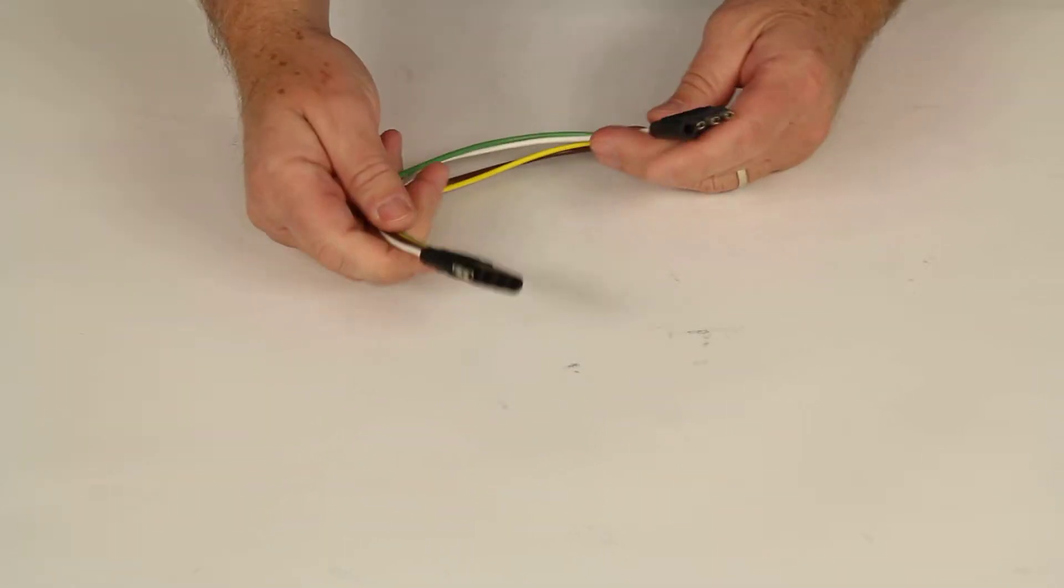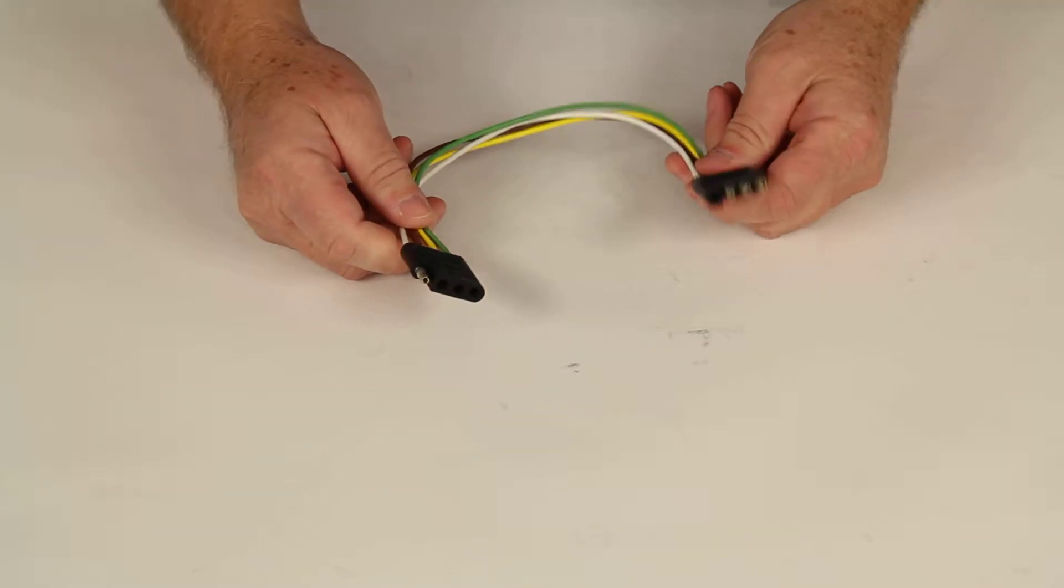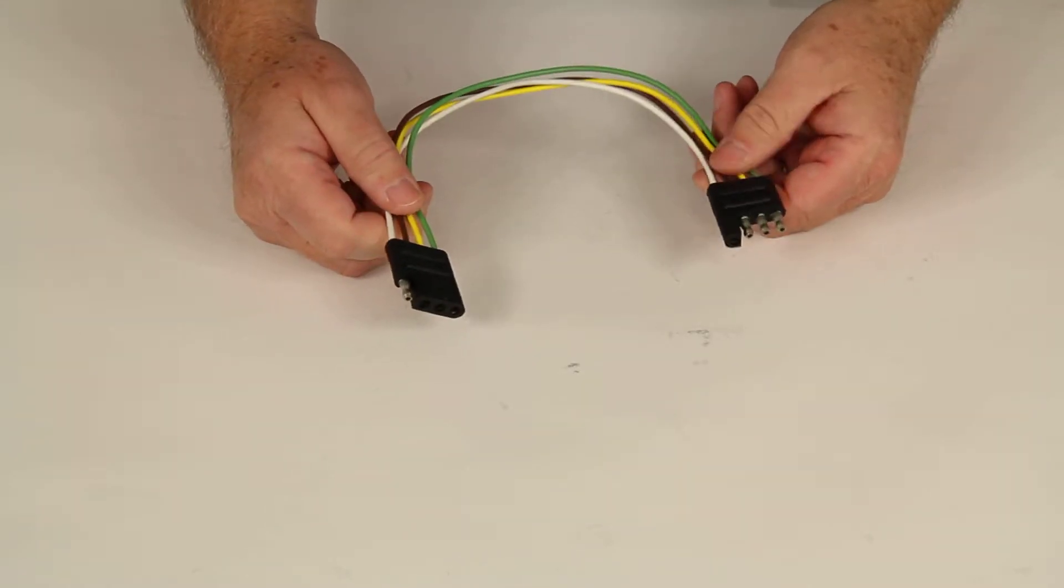Today we're going to review part number 9653. This is the Spectro 4-way trailer connector car and trailer end loop.